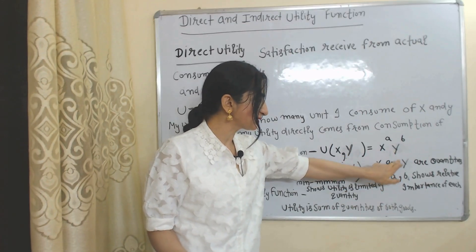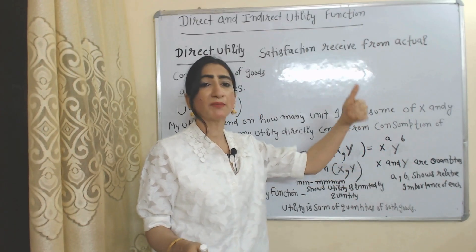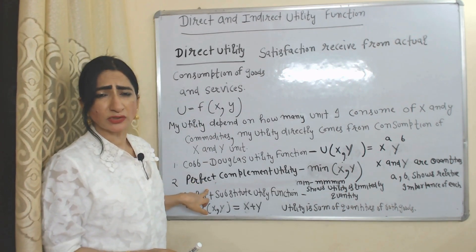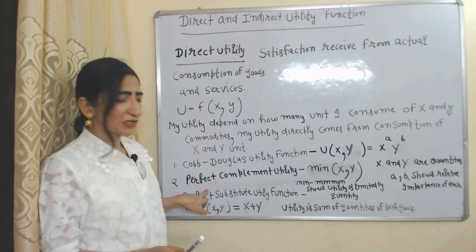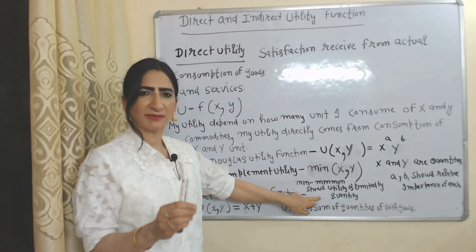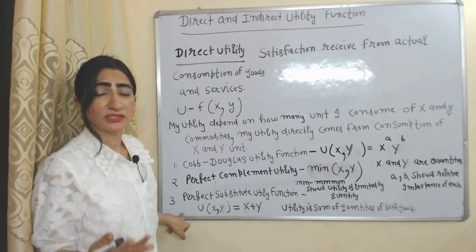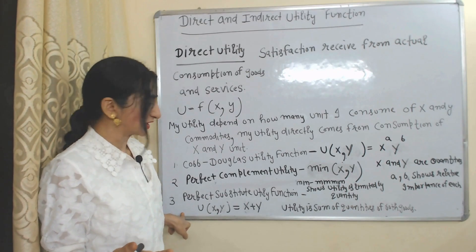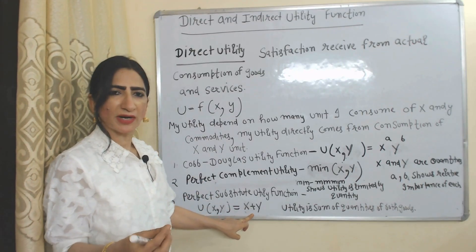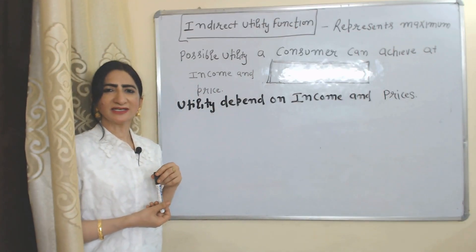In the Cobb-Douglas utility function, X and Y are quantities of goods, and A and B show the relative importance of each good. Perfect complement also generates direct utility — the minimum sign represents that utility is limited by the quantities of the goods. Perfect substitute also generates direct utility, where utility is the sum of quantities of both goods.